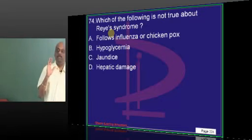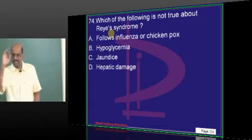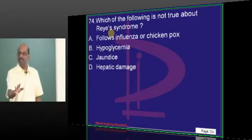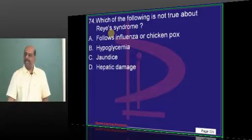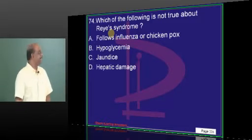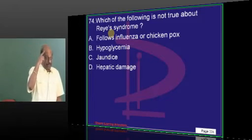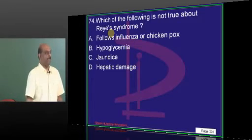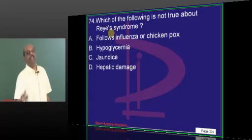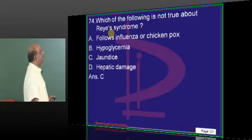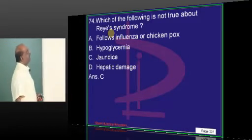Reye syndrome. This is the standard question asked since pre-independent India. Jaundice will not be there. Hepatic encephalopathy will be there. Hyperammonemia will be there. Fulminant hepatic failure will be there. But jaundice will not be there. So that is a classical feature of Reye syndrome.